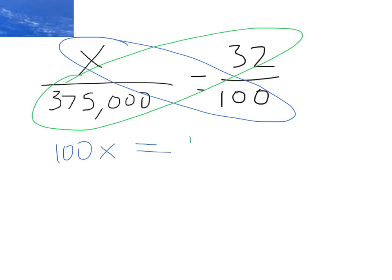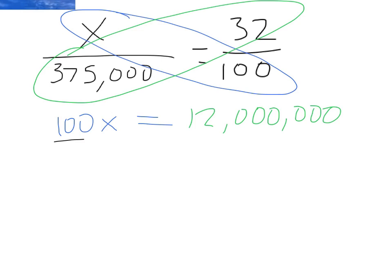375,000 times 32. That's going to equal 12 million. And lastly, I'm just going to solve for X. So I'm just going to divide by 100. Divide by 100. Remember, if I'm dividing by 100, it essentially means I move this decimal two places to the left. Dividing by 1,000, move it three places to the left, and so on and so forth. But anyway, in the end,